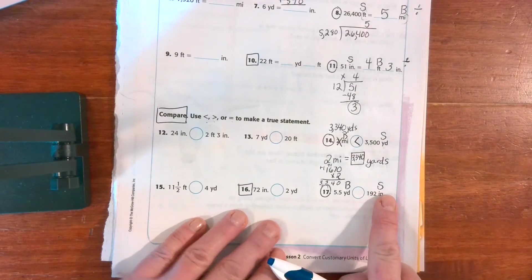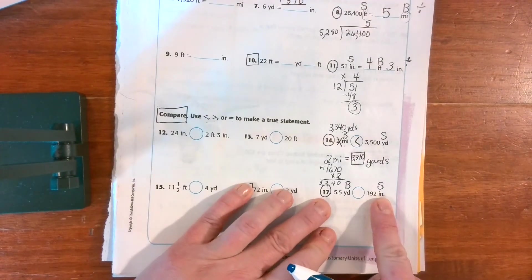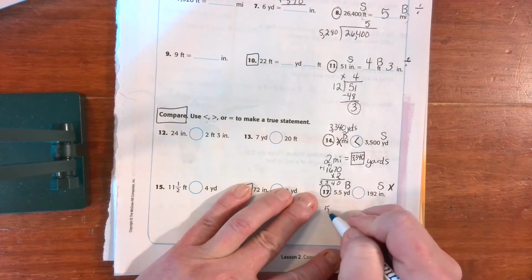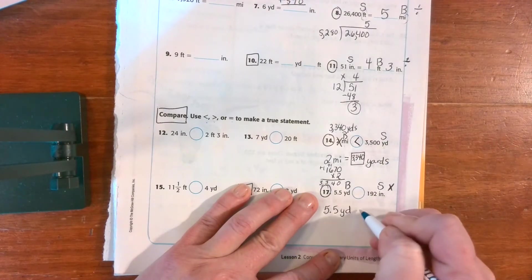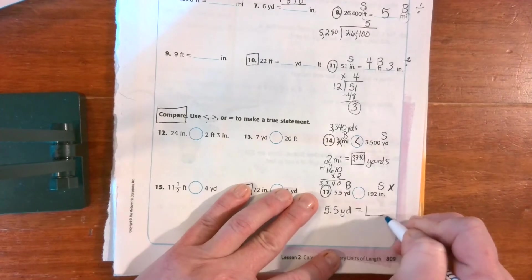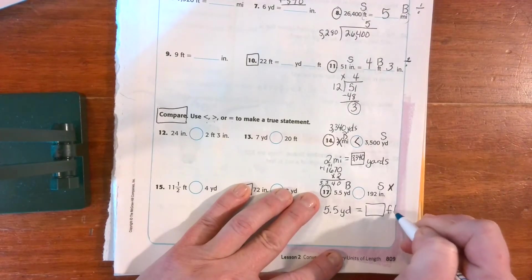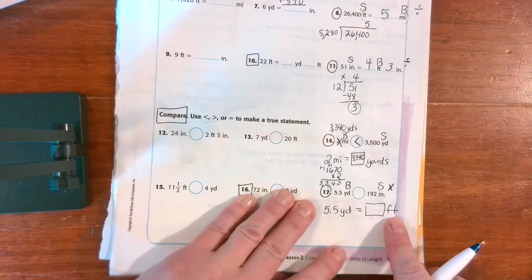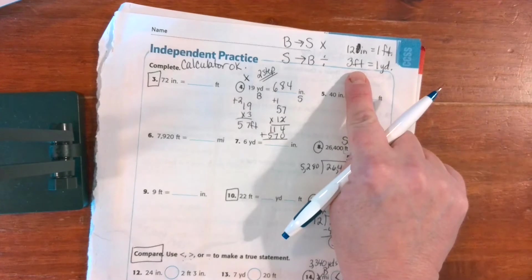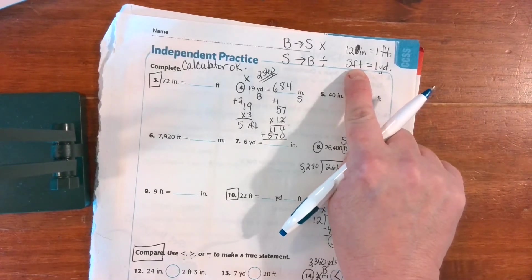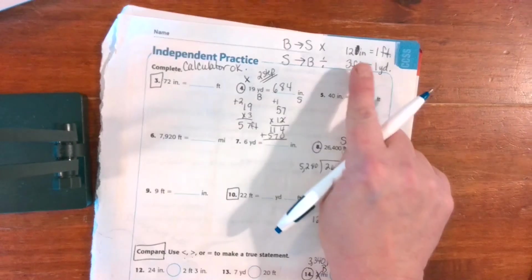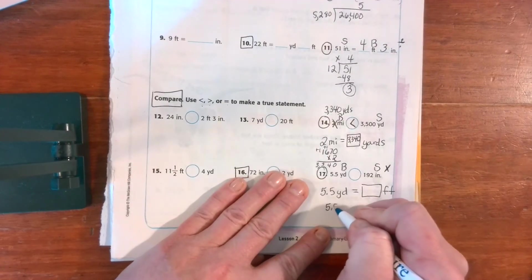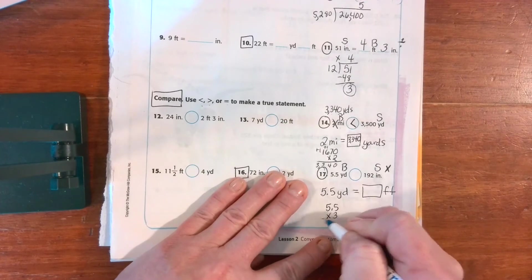All right, big to small means I'm multiplying. I'm much better at multiplying than I am at dividing. So I'm going to change 5.5 yards to some number of feet. Yards to feet, I'm going to find my formula. Yards to feet are times three because I know I'm big to small, so I'm multiplying. And I know my formula is three for one.